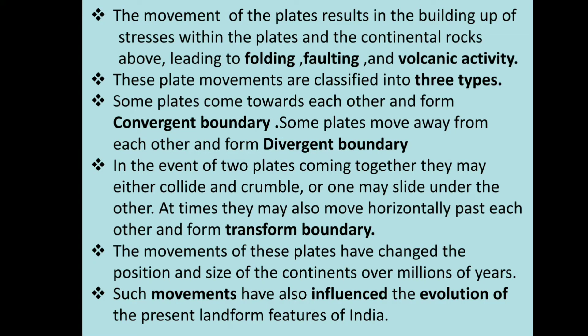Earth's crust is divided into seven major and some minor plates. These plates are continuously floating on magma, leading to folding, faulting and volcanic activities. The movement of the plates results in the building up of stresses within the plates and the continental rocks above, leading to folding, faulting and volcanic activity.